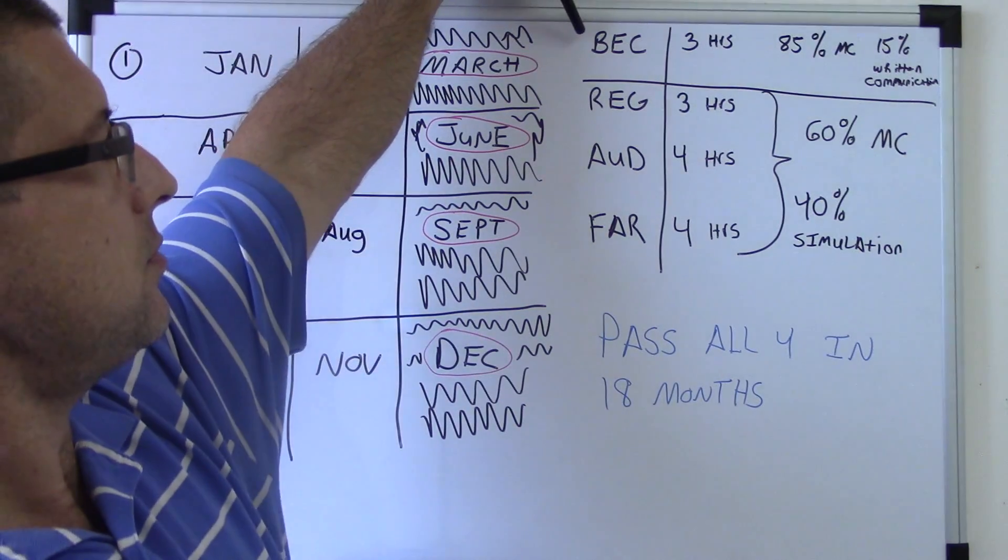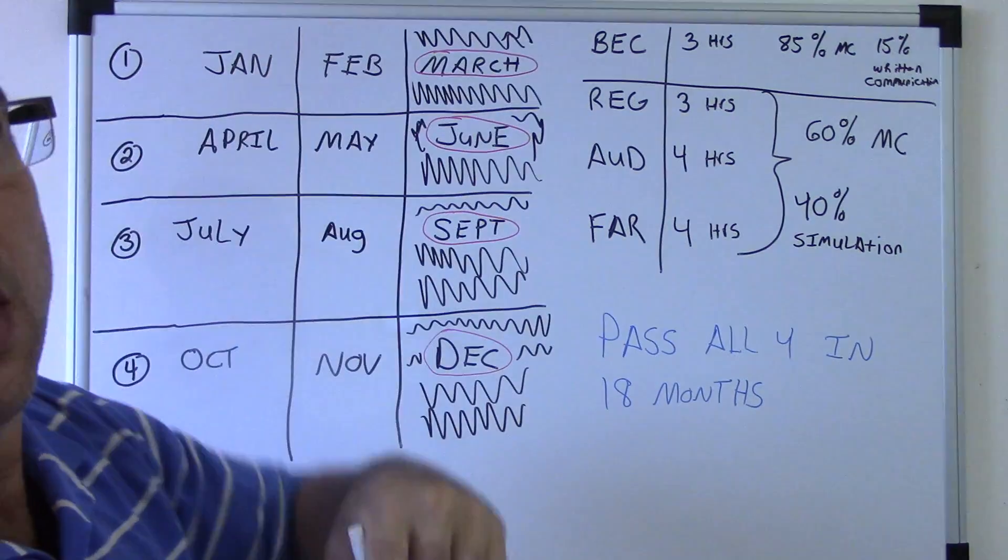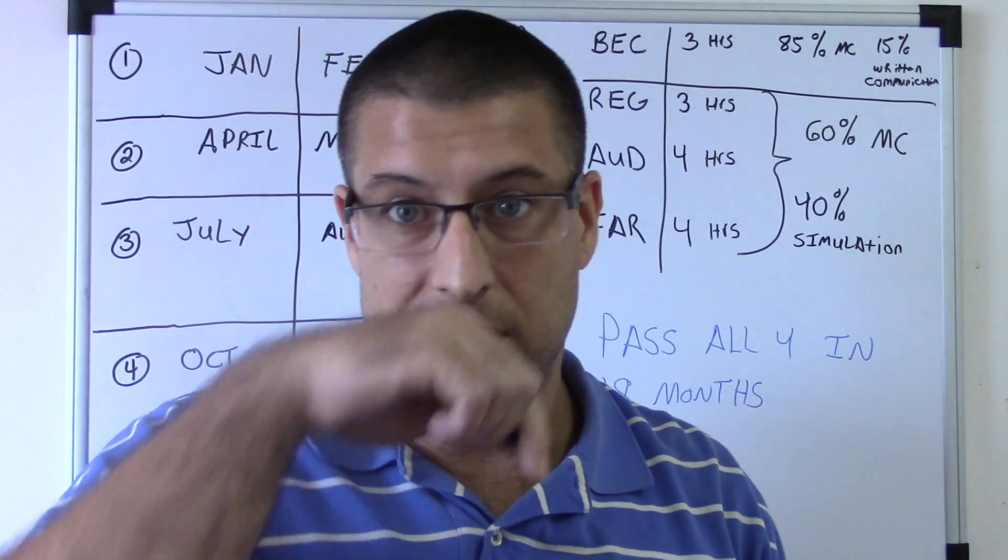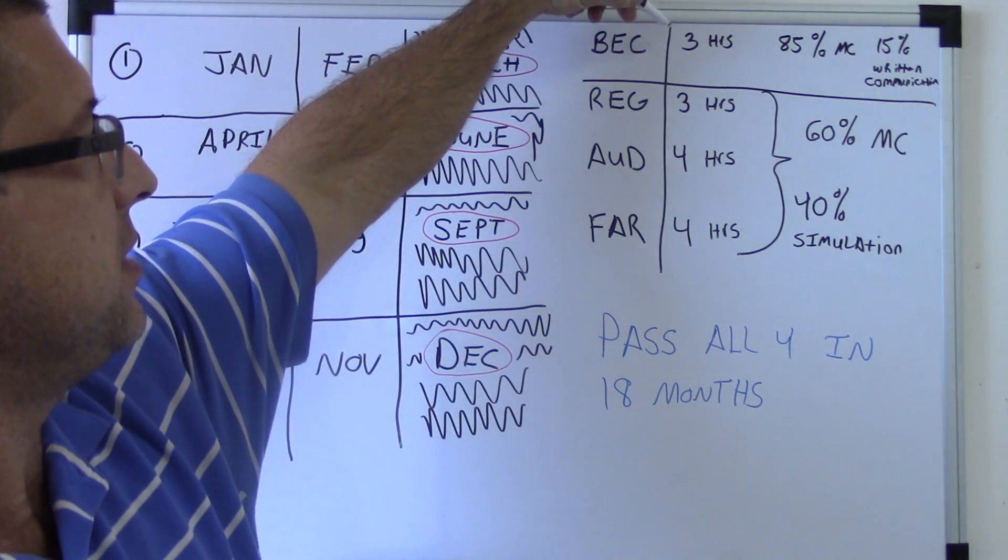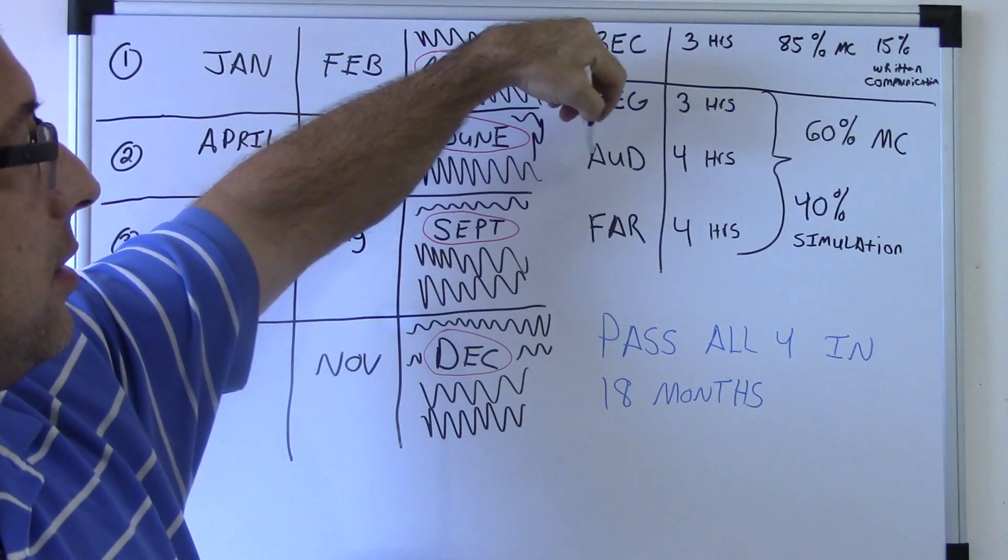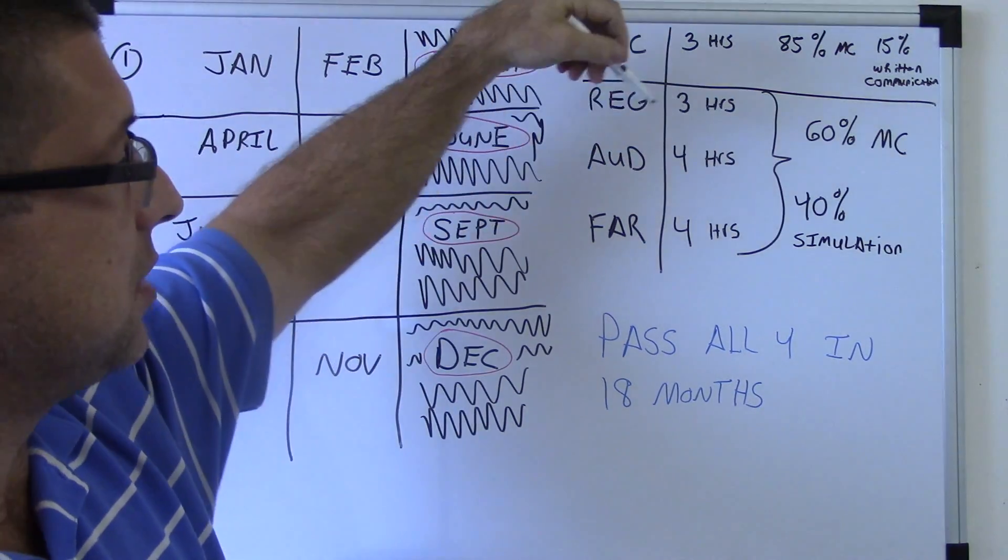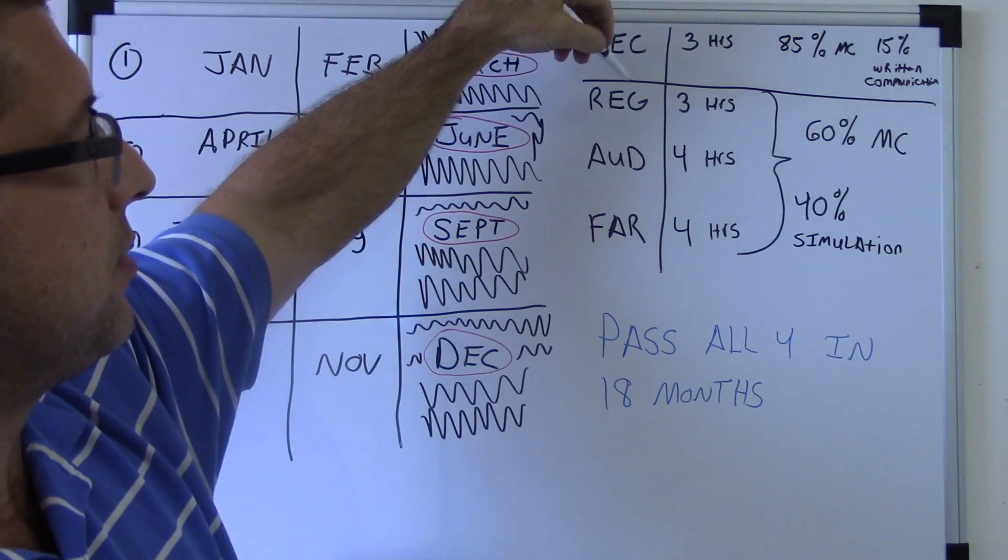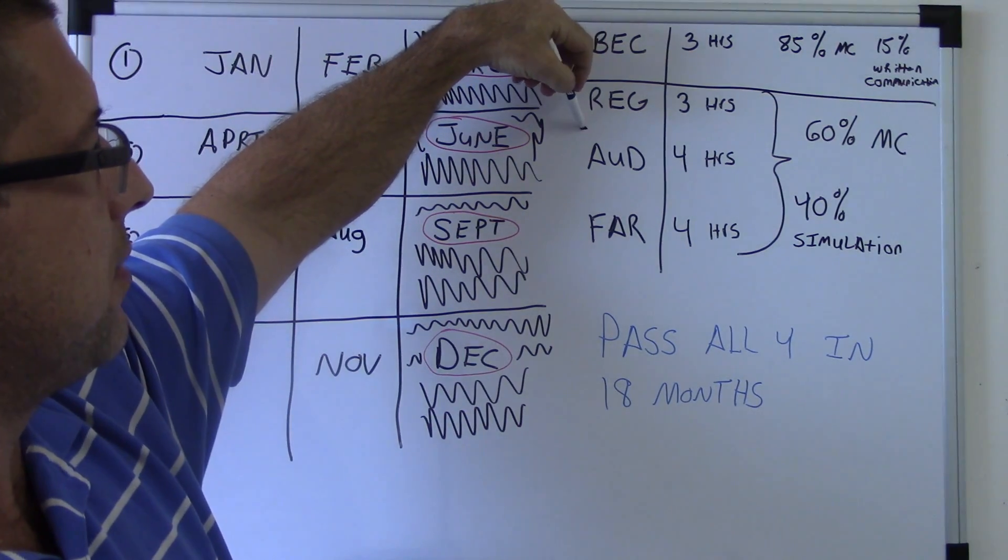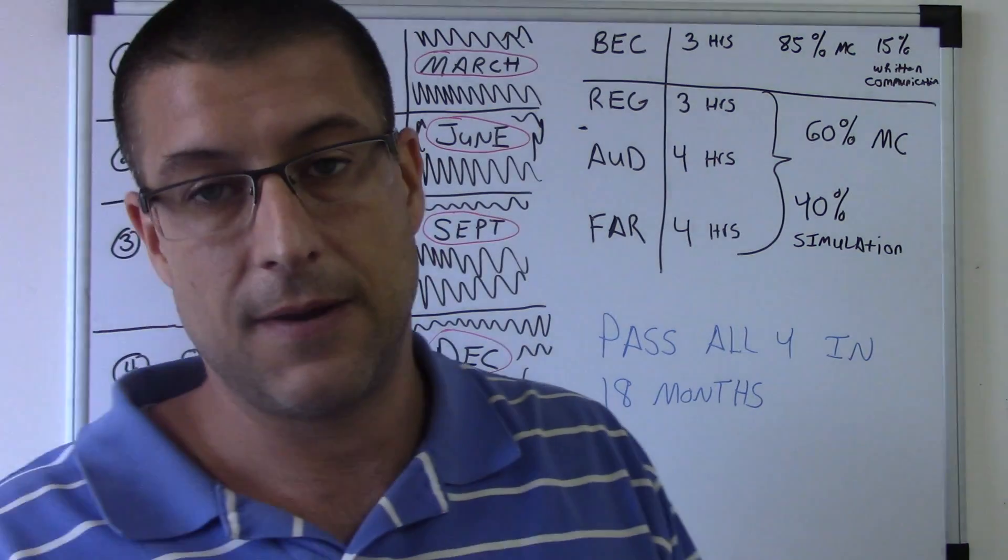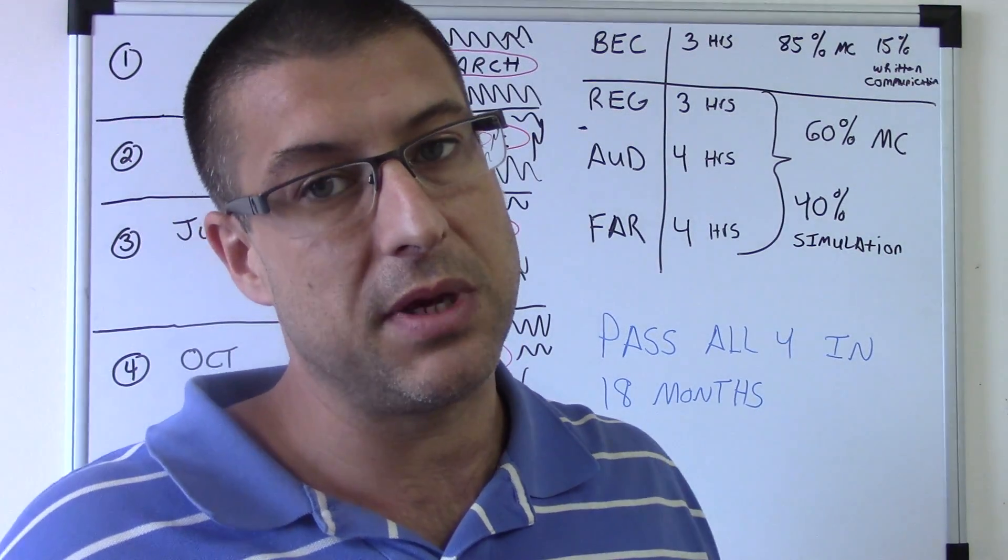Because I would just get used to everything and these two exams, BEC and REG, are three hours long and audit and FAR is four hours. So I would do the three hour ones first, get the three hour ones out of the way first.